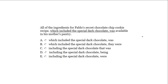So this technique will narrow down where we look for the subject and verb in a sentence, making it easier to find them. Let's begin. All of the ingredients for Pablo's secret chocolate chip cookie recipe, which included the special dark chocolate, was available in his mother's pantry.